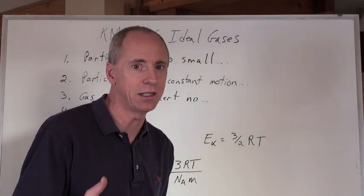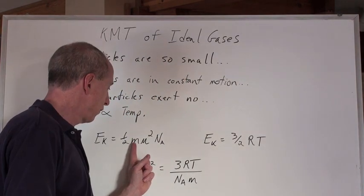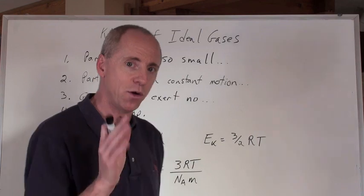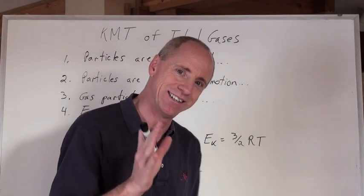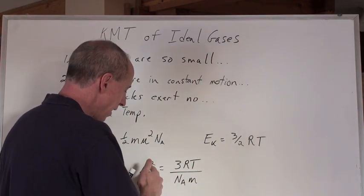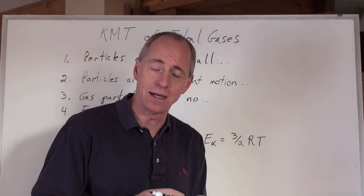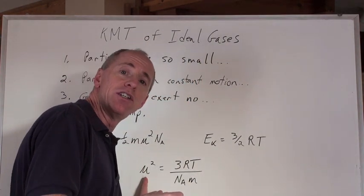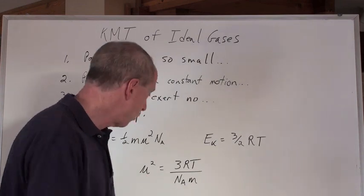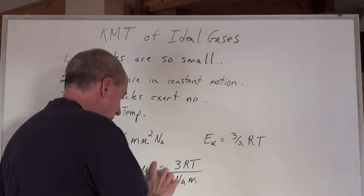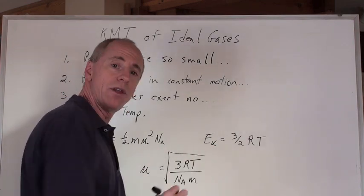You get this formula. You get mu squared equals three-halves RT over Avogadro's number times mass. And that mass, of course, is in kilograms because that is the unit there for mass in that kinetic energy formula. But the really cool thing is, look at this, that if you say, well you know what? I want to solve for speed, not the square of the speed. And that's the square of the average velocity of the particles. So if we take the square root of that side, you know what happens. We get rid of this and we put the square root there.